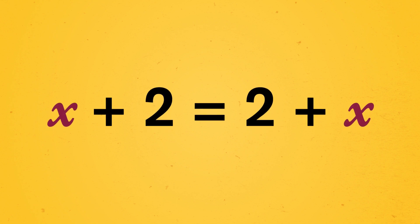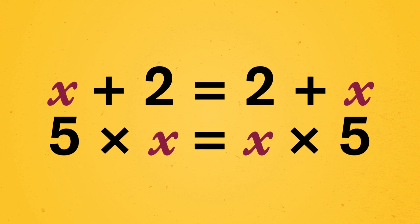Right now, our pictures have only told us that the commutative property works for counting numbers. So in algebra, we have to decide whether x plus 2 equals 2 plus x, or 5 times x equals x times 5 works no matter what type of number x is. And spoiler alert, it will.